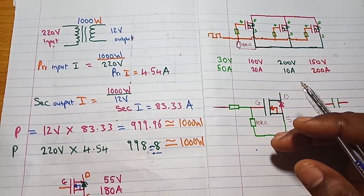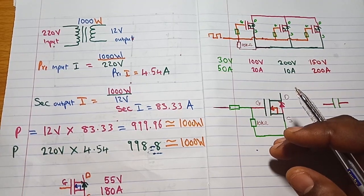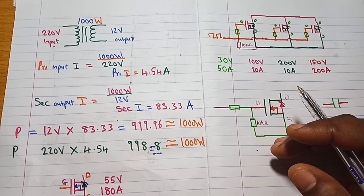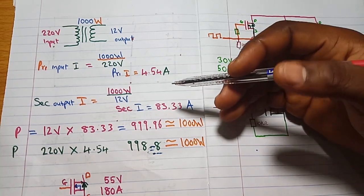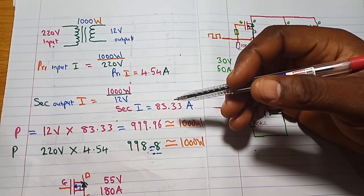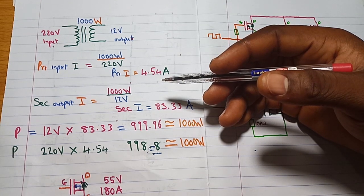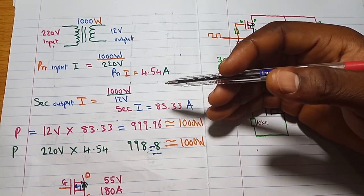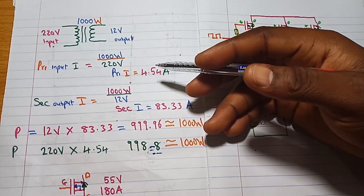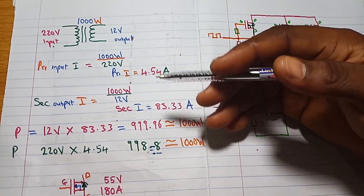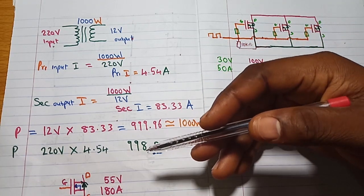Good day guys, welcome to the third video in the series on how to design a solar inverter. In our last video we discussed the transformer, how it determines the capacity of an inverter, and we did some basic calculations on the power rating. Now in this video we are going to look at the MOSFET.